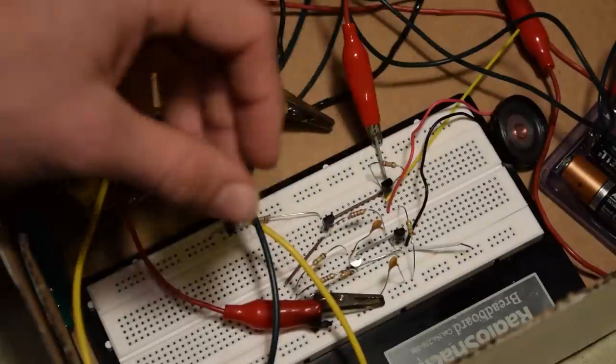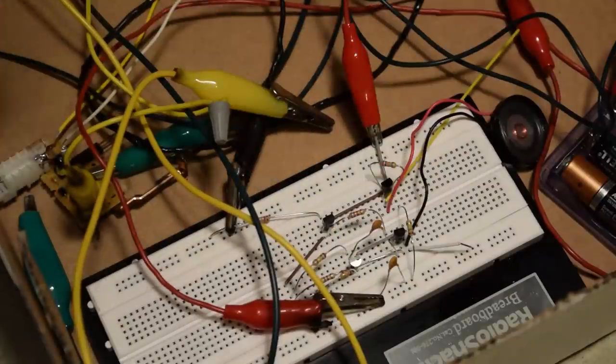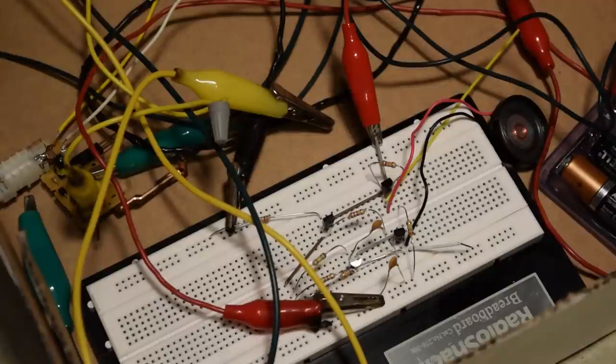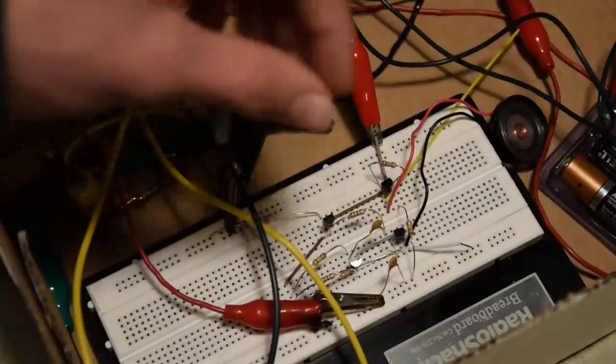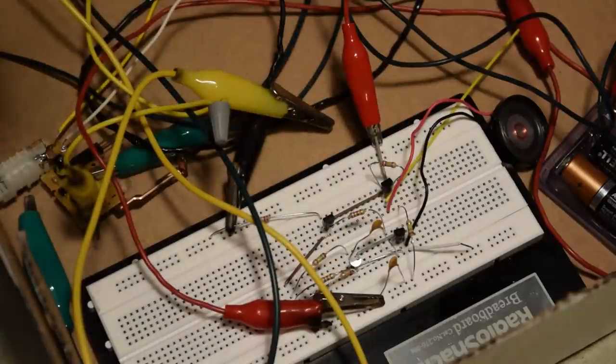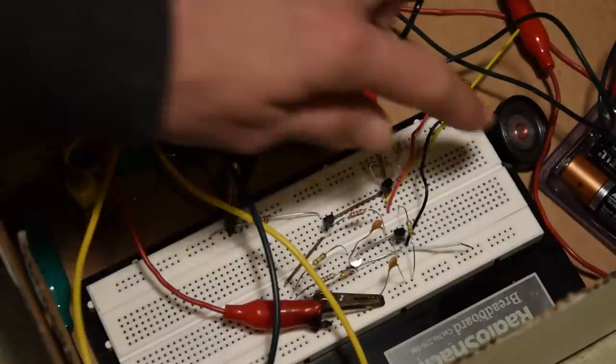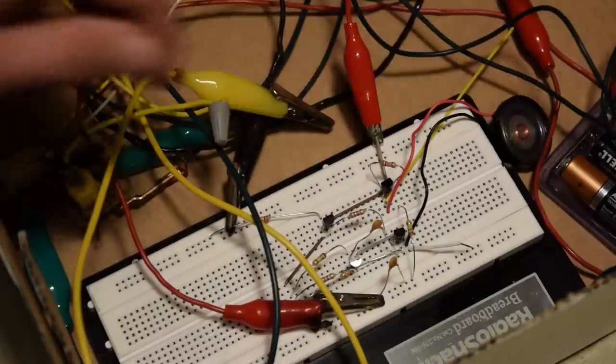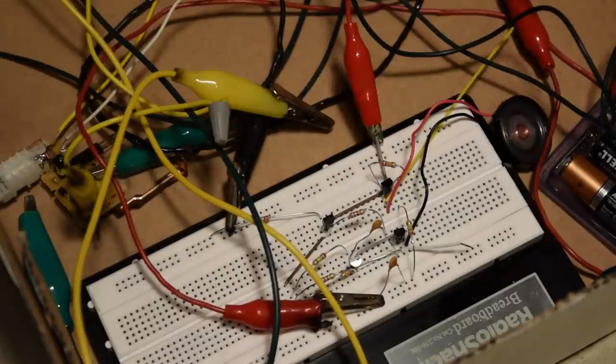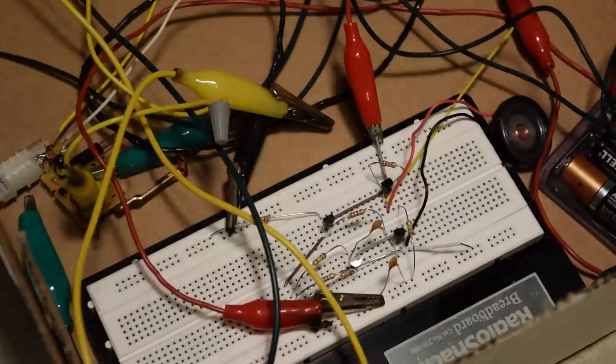The first two transistors stretch the signal that comes from the Geiger tube. There's little voltage drops here and there when the tube detects a particle of radiation. These first two transistors lengthen that signal so that it's a little more usable. The second transistors amplify it so that it can be heard on this 8 ohm speaker. And that's the simplest way that I can explain how this circuit works.